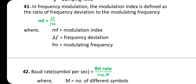Forty-first one: In frequency modulation, the modulation index is defined as the ratio of frequency deviation to the modulating frequency: m_f = Δf / f_m, where m_f is the modulation index, Δf is the frequency deviation, and f_m is the modulating frequency.